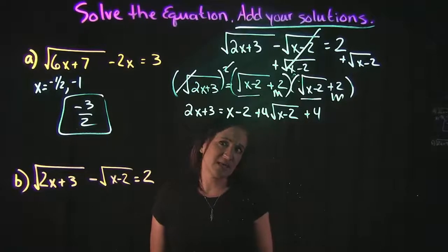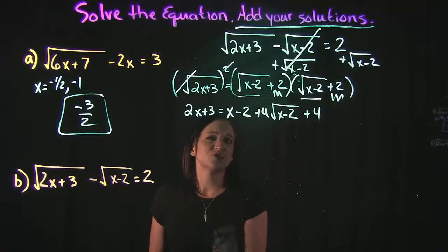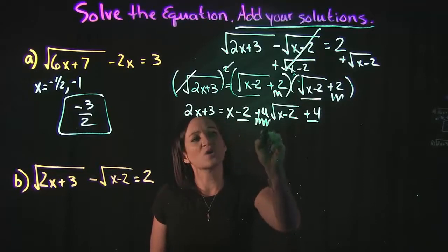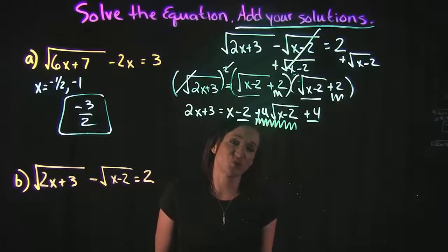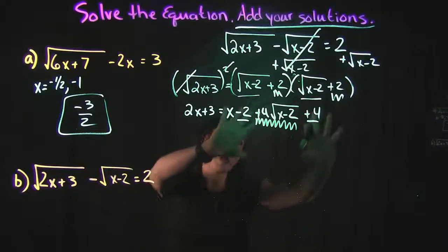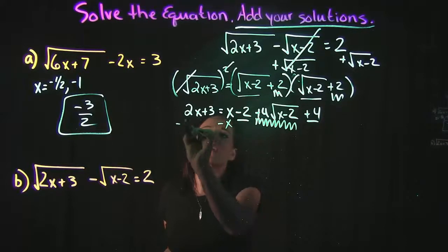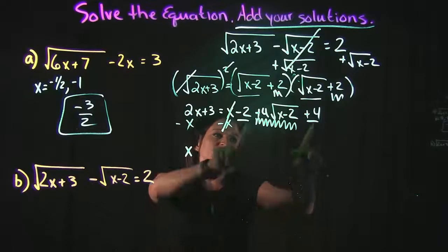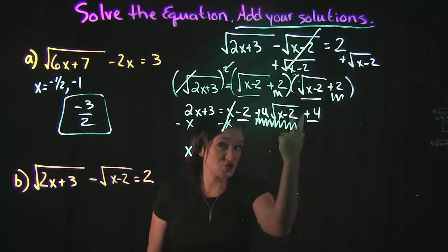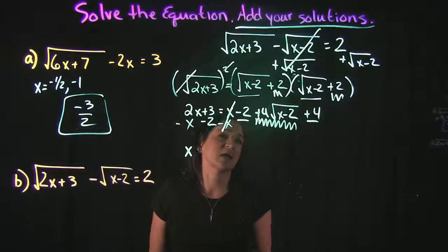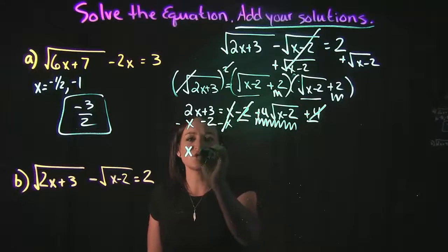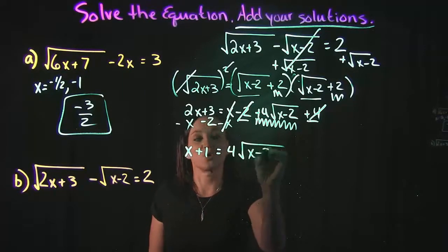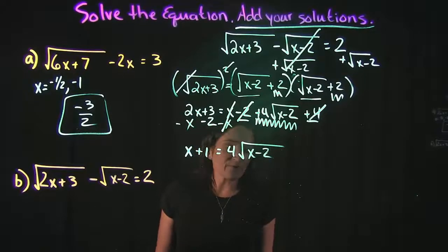I'm still left with a radical, so I need to do more cleanup. I'll move everything that's not a radical to the left side: subtracting x from both sides gives 2x minus x equals x; combining the constants negative 2 plus 4 gives 2, and subtracting that 2 gives 3 minus 2 equals 1. So on the left I have x plus 1, and on the right I have 4 times the square root of x minus 2.